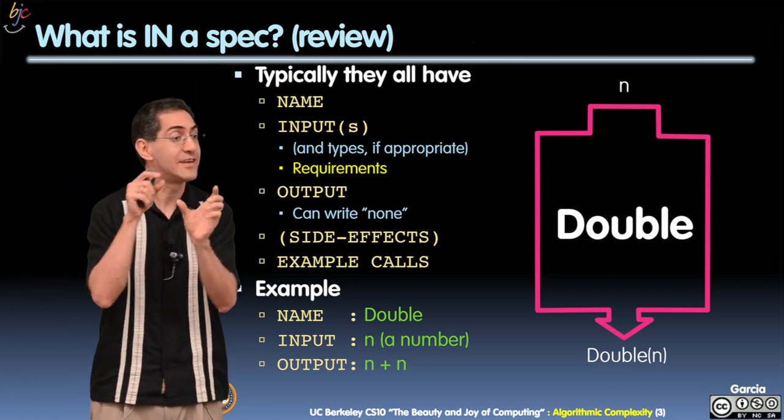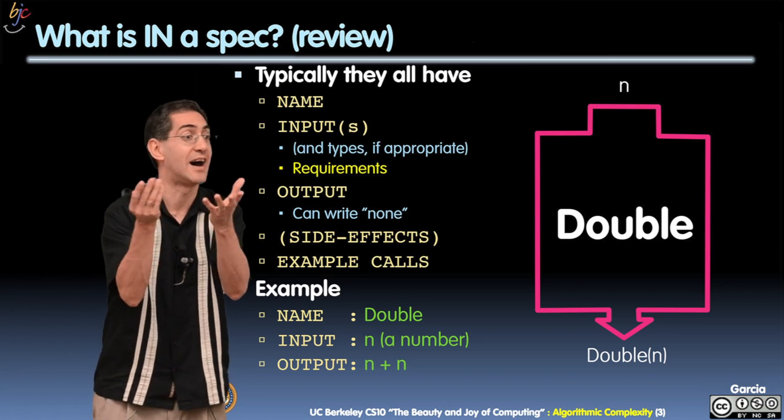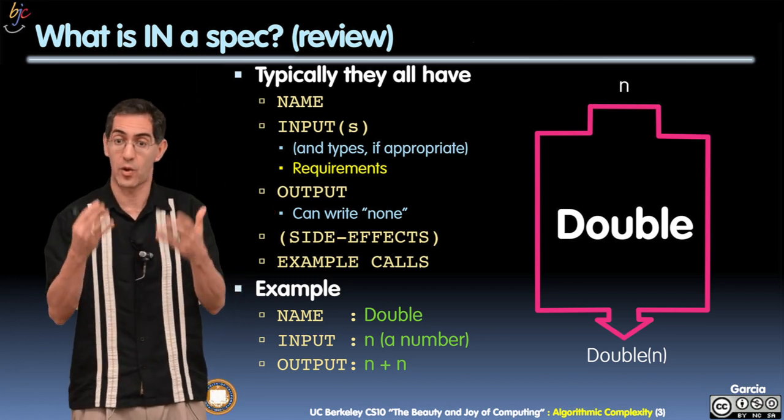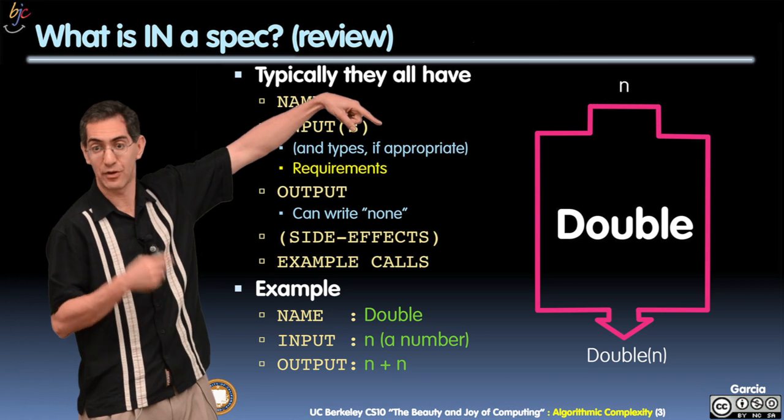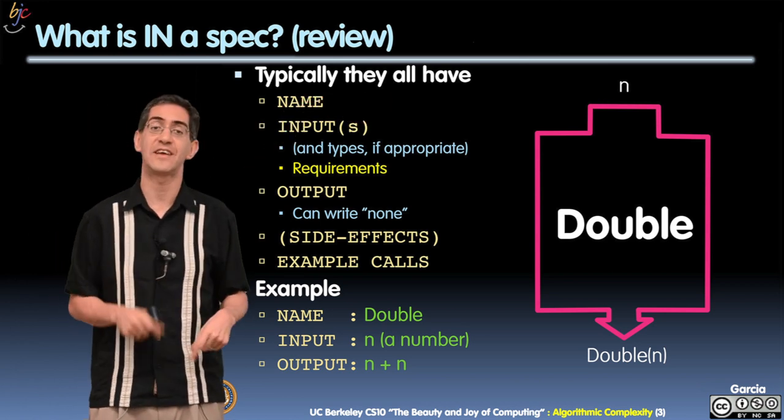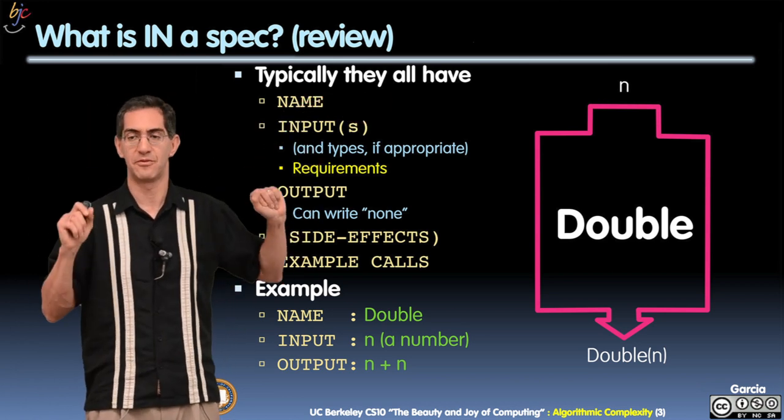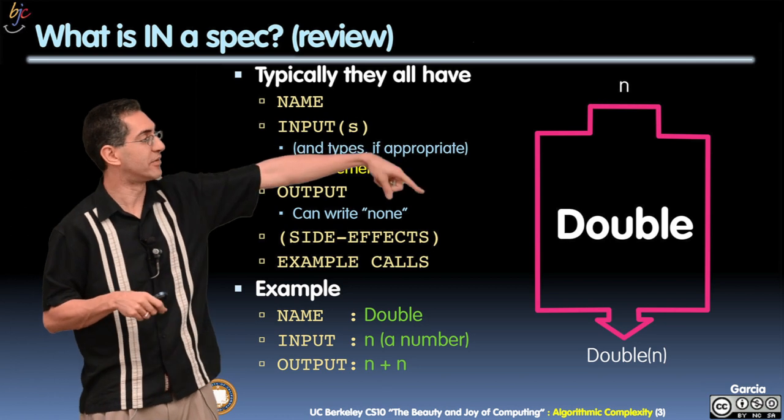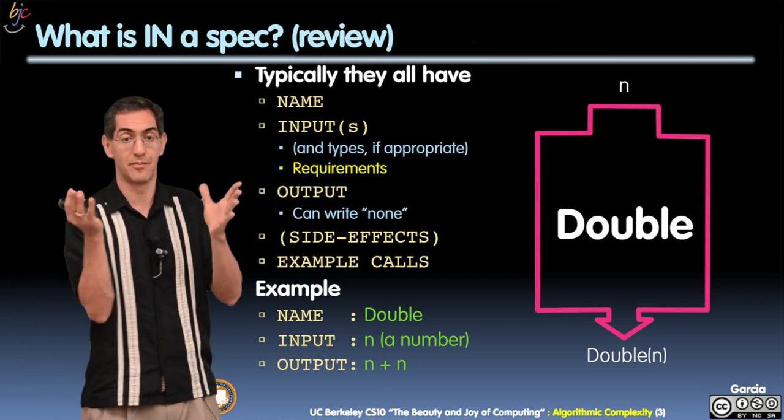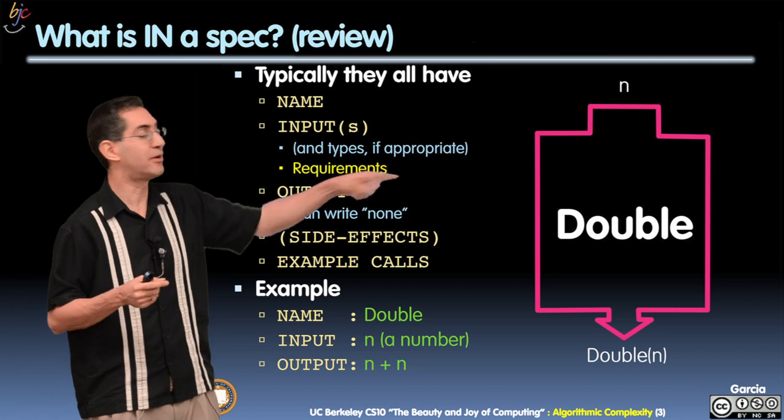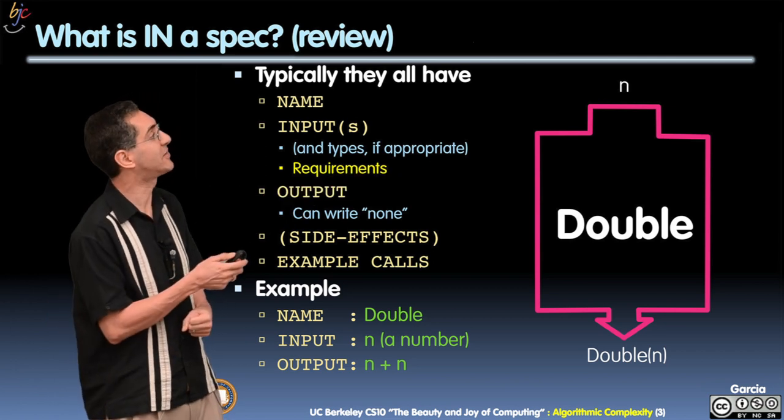Requirements of that input. Oh, it's a number but only between 3 and 5. That's valid. It has an output, you can say none to that. You might have side effects, example calls. You've probably seen this before. Here's an example: double, input n where n is a number, output is n plus n. Here's the fun part, watch this.